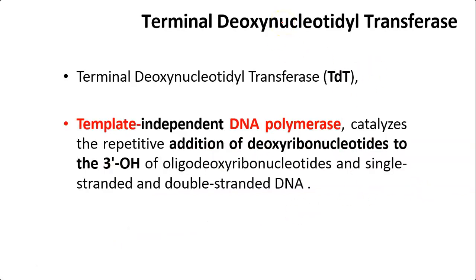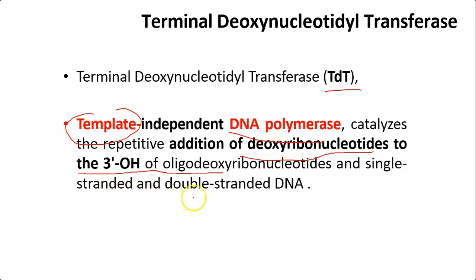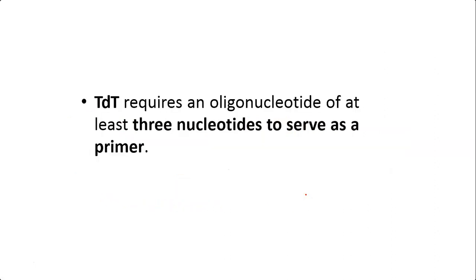Terminal Deoxynucleotidyl Transferase (TDT) is a template-independent DNA polymerase — it does not require a template. It catalyzes the repetitive addition of deoxyribonucleotides to the 3' hydroxyl group of oligodeoxyribonucleotides, acting on both single- and double-stranded DNA. This enzyme requires an oligonucleotide of at least 3 nucleotides to act as a primer.